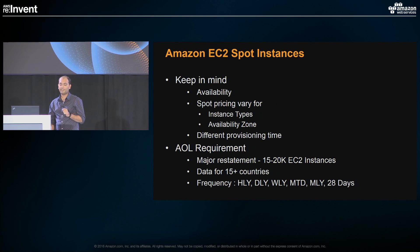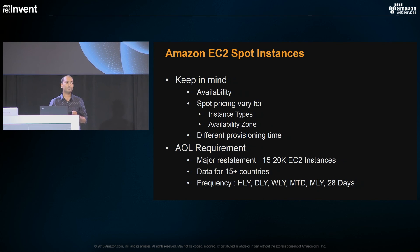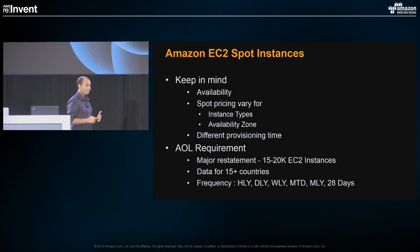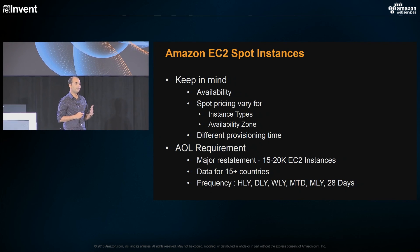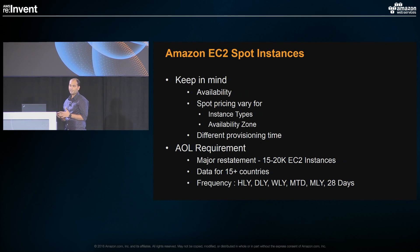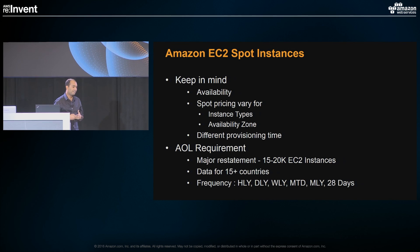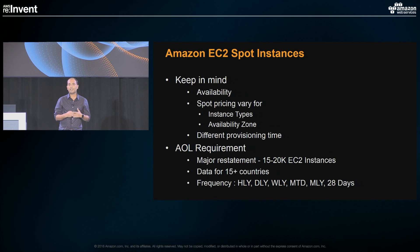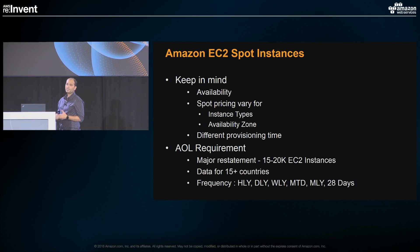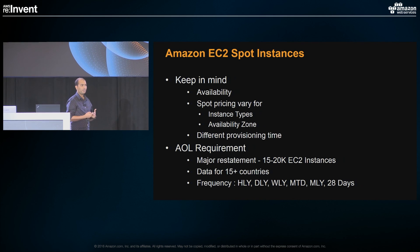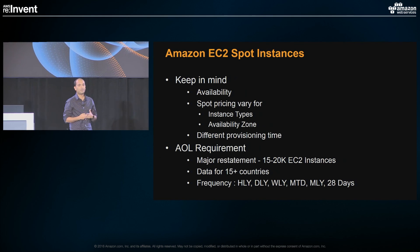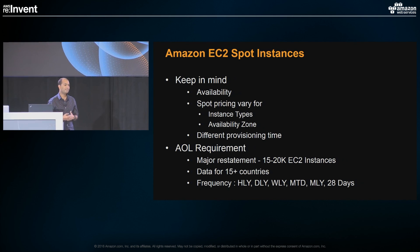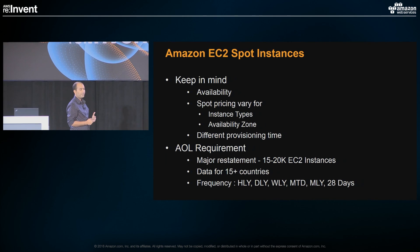In our use case, we process most batch data, so a little extra provisioning time was acceptable. Our capacity requirement is around 15,000 to 20,000 EC2 instances. These are complex clusters that run for a few hours, so compute hours are around 50,000 to 60,000. On a normal day, we need around 10,000 to 11,000 compute hours. The data volume is a few terabytes, and we process data for multiple countries since our brands are global. The frequency of data processing ranges from hourly to daily to monthly.